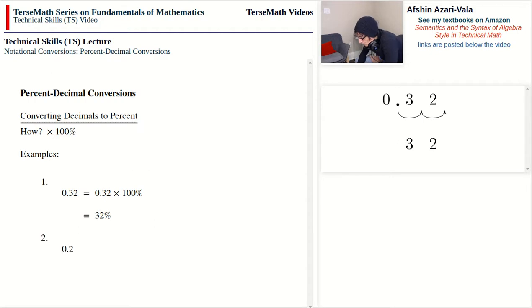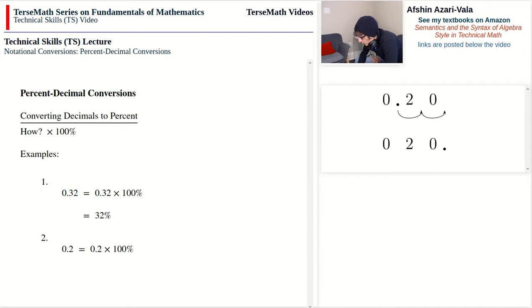Problem number two: we have 0.2. We multiply by 100, meaning the decimal point moves forward over two digits — one, two — adding a zero. We end up with 20, so 0.2 = 20%.